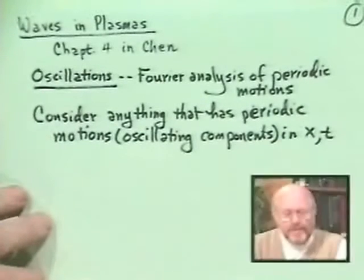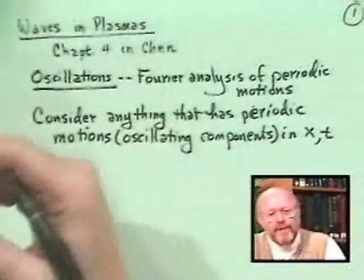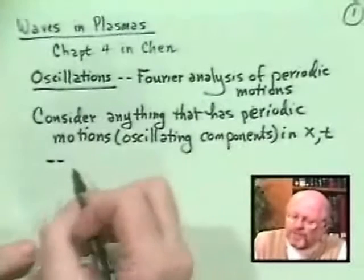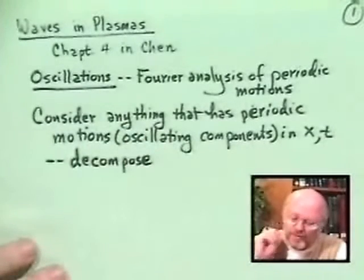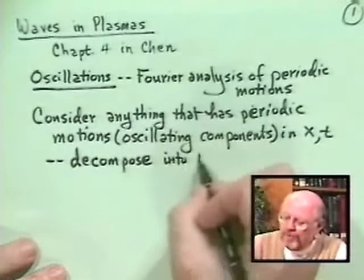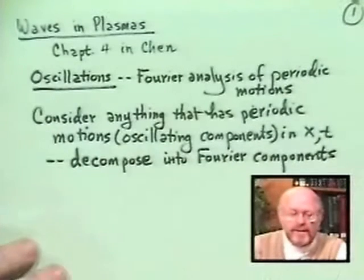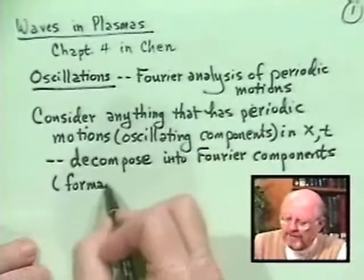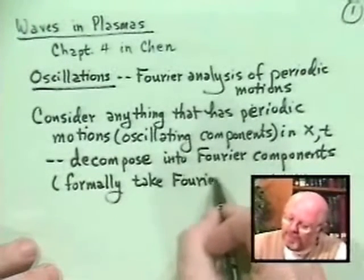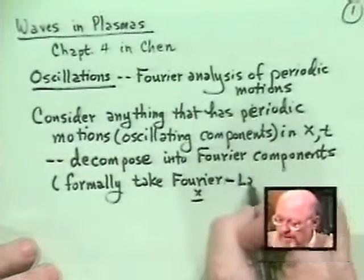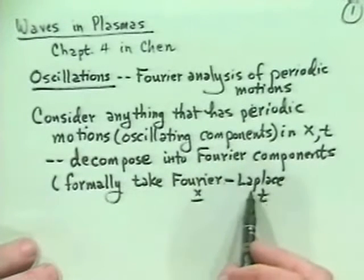What we'd like to do is decompose that not into a function regularly of x and t, but rather into something which indicates the oscillatory behavior. We want to decompose the total response — density, temperature, or something — into Fourier components. Formally, we do this by taking the Fourier and perhaps Laplace transforms.